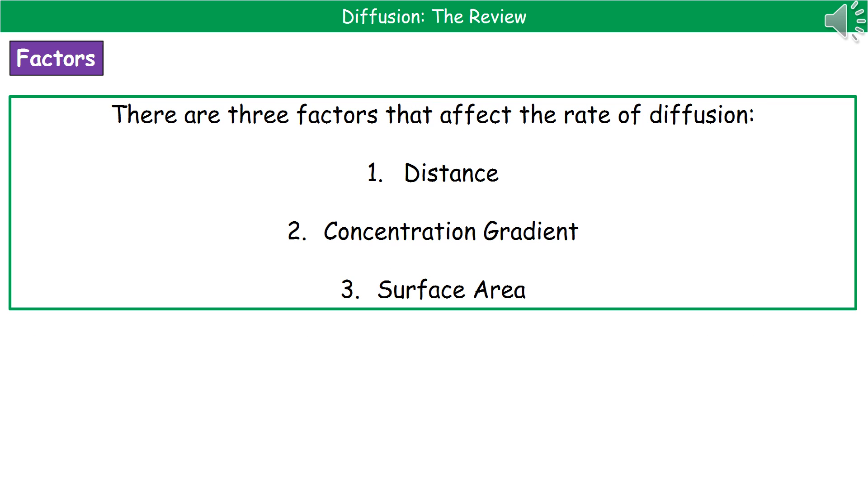Now that we've got a basic understanding of what diffusion is and where it occurs, we do need to know the three factors which can affect the rate at which it occurs. So you need to remember that the distance, the concentration gradient, or the surface area could affect the rate at which diffusion takes place.